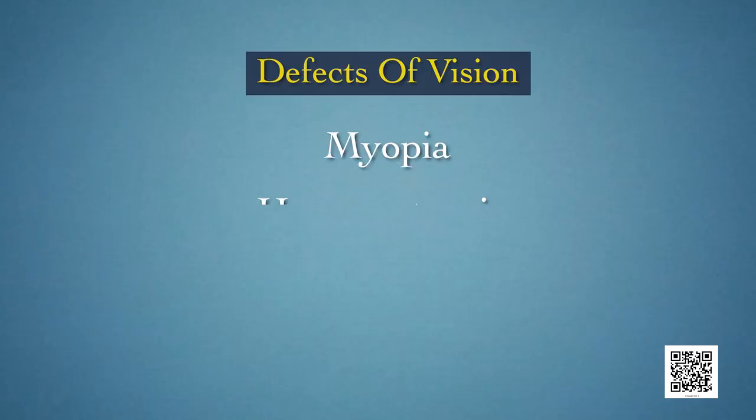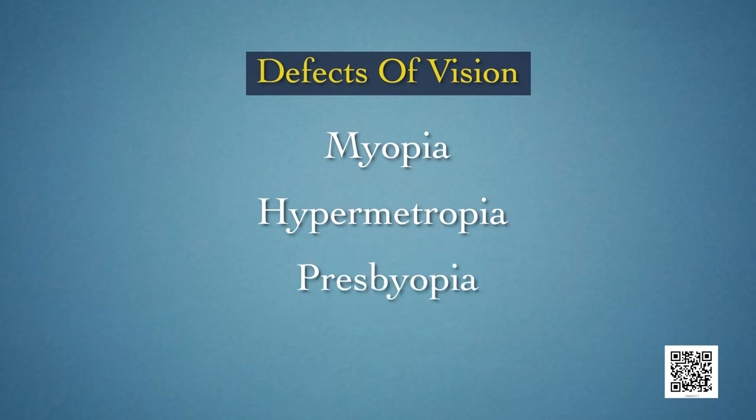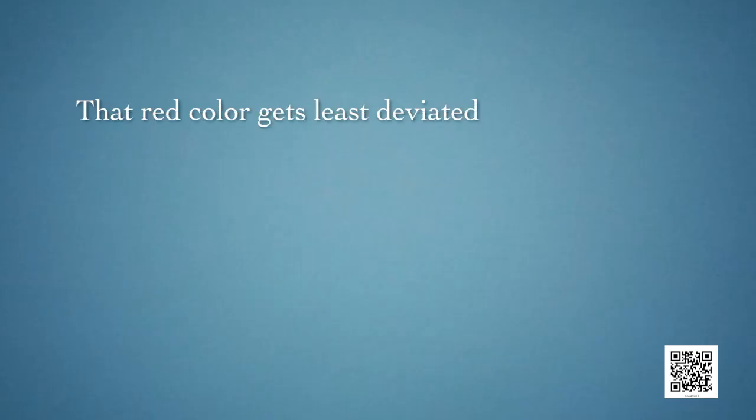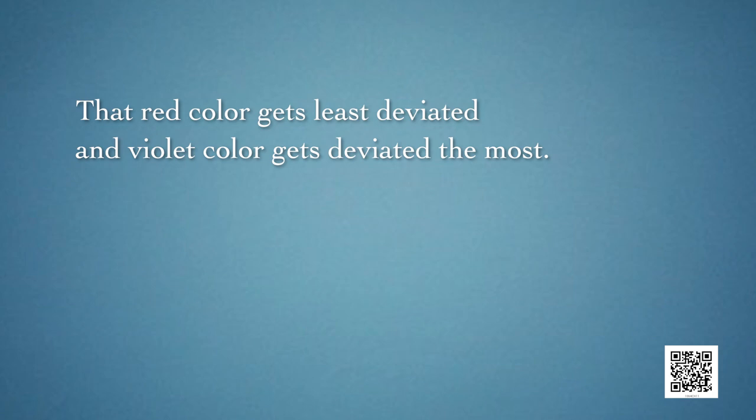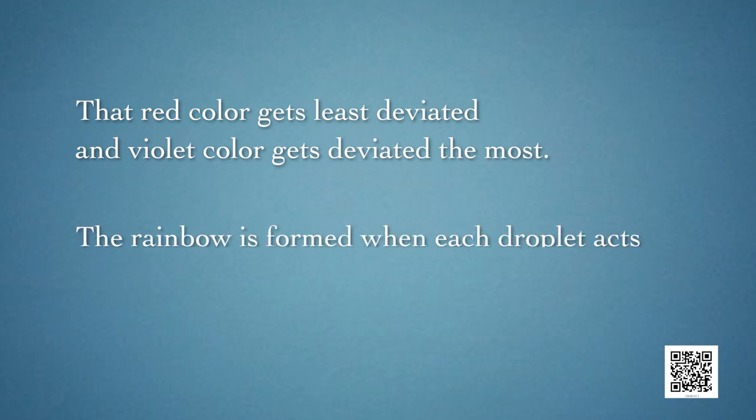Namaste, dear students. We are all aware of the internal structure of the human eye, the defects of vision which are myopia, hypermetropia and presbyopia. We can find out the angle of deviation for an angle of incidence in a glass prism, and we can reason out that red colour gets least deviated and violet colour gets deviated the most. The rainbow is formed when each droplet acts like a small prism. Today let's understand the science behind the colourful world.